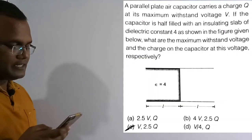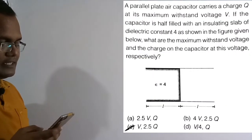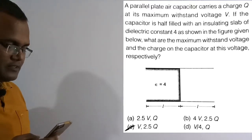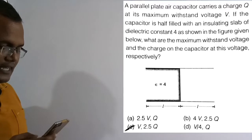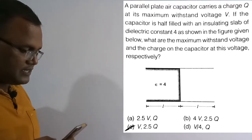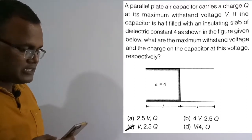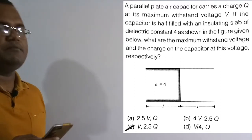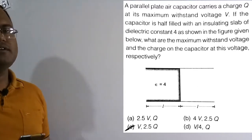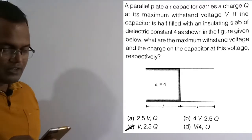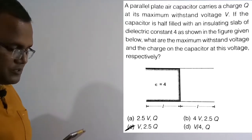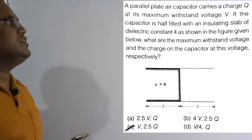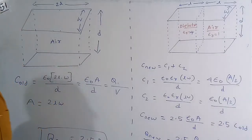Now we are going to solve the 50th question. A parallel plate air capacitor carries a charge Q at its maximum withstand voltage V. If the capacitor is half-filled with an insulating slab of dielectric constant 4, what are the maximum withstand voltage and charge on the capacitor respectively? Option C, which is V comma 2.5Q, is the correct solution.